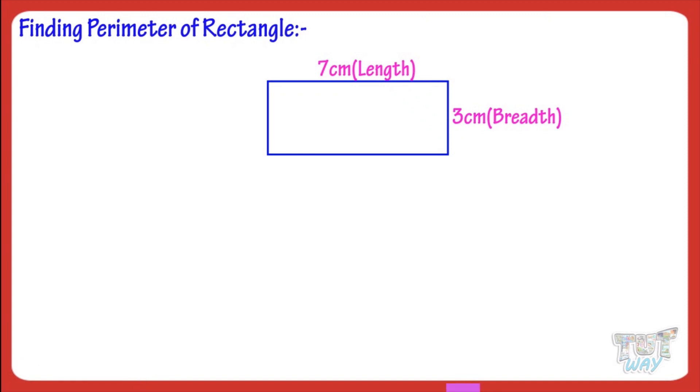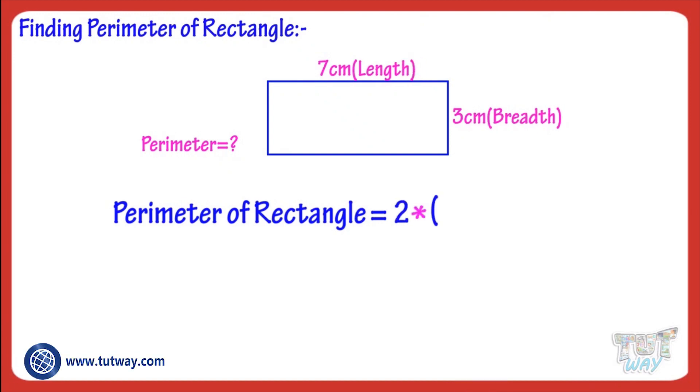Now let's find its parameter. The formula to find the parameter in case of a rectangle is 2 times length plus breadth. That is, 2 multiplied with the sum of length and breadth. Here, length is 7 cm and breadth is 3 cm.